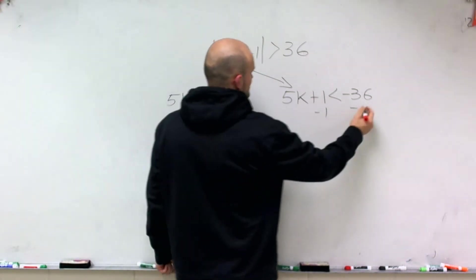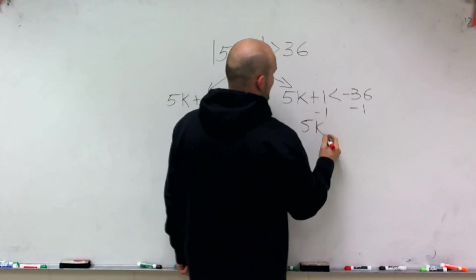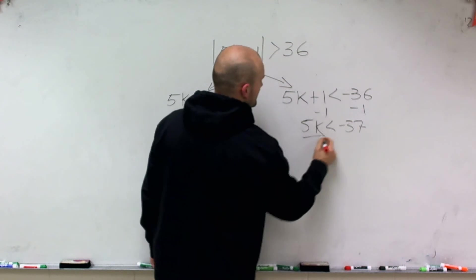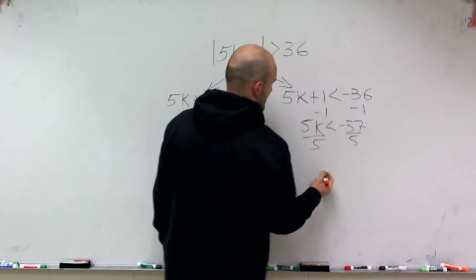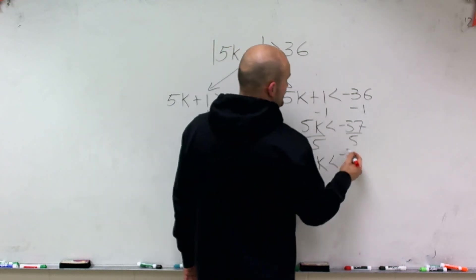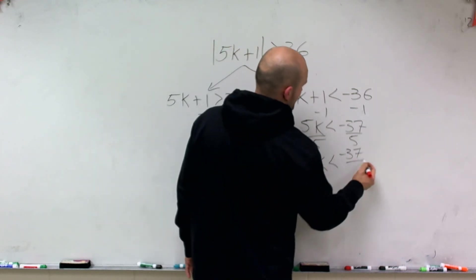Over here, I subtract, and I get 5k is less than negative 37, divide by 5, and I get k is going to be less than, since 5 does not divide into negative 37, I'll just leave that as a fraction.